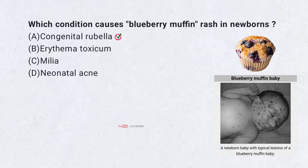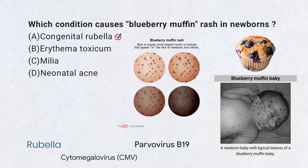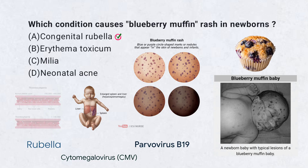The blueberry muffin rash represents dermal erythropoiesis from intrauterine infection. Rubella, CMV, or parvovirus B19 can cause this finding. Lesions are non-blanching blue-red papules. Associated features include hepatosplenomegaly and thrombocytopenia. Diagnosis requires viral PCR and serological testing.